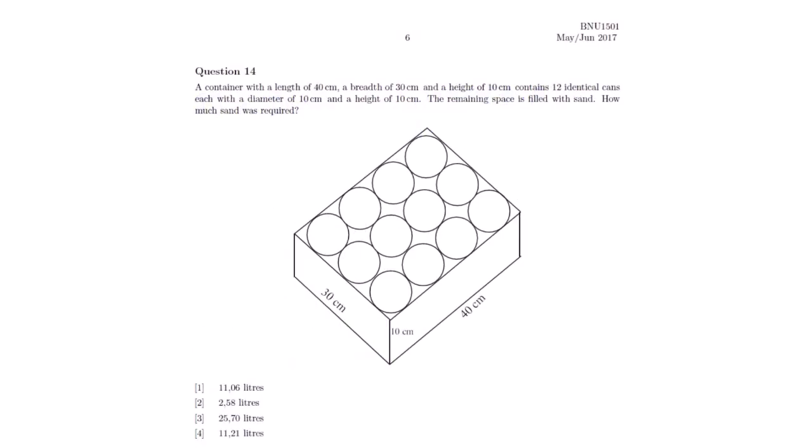The question that we have is this one. This is not the first question that we are looking at under this chapter. Before we can answer the actual question, we go through how to calculate the volume, the area, the perimeter, depending on the question of different types of shapes. Question 14: a container with a length of 40 cm, a breadth of 30 cm and a height of 10 cm contains 12 identical cans, each with a diameter of 10 cm and a height of 10 cm. The remaining space is filled with sand, how much sand was required?